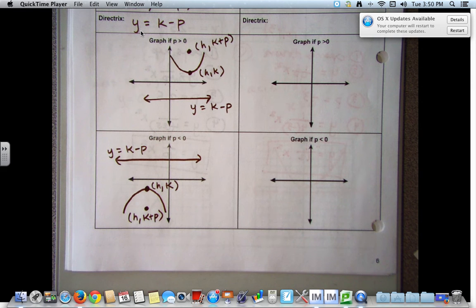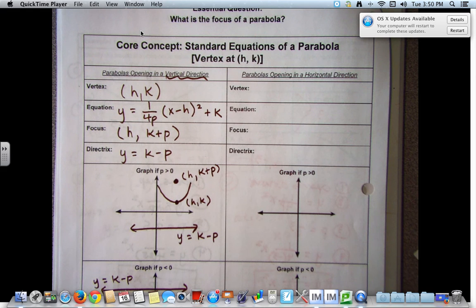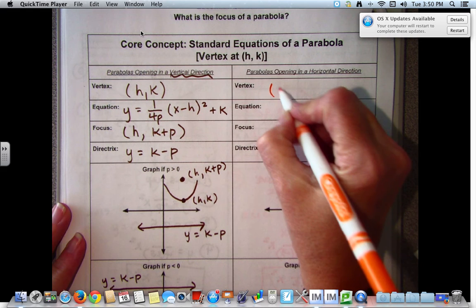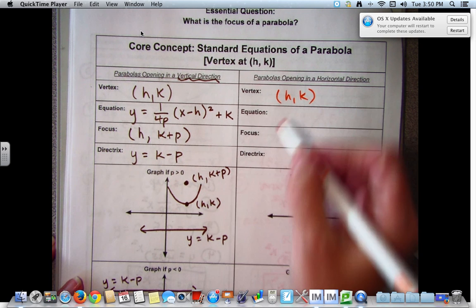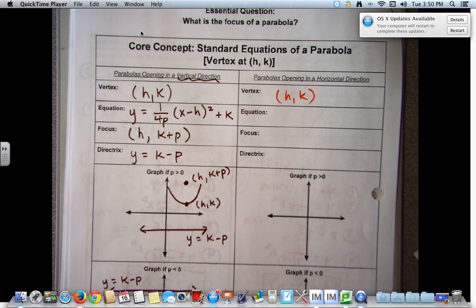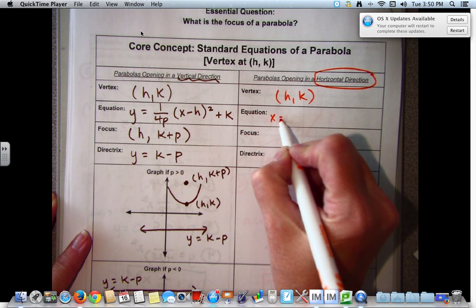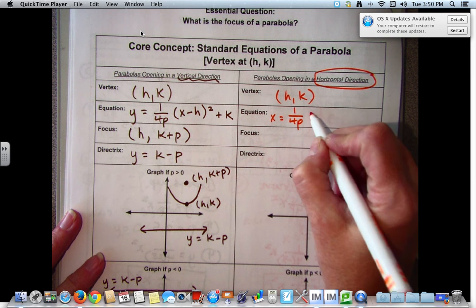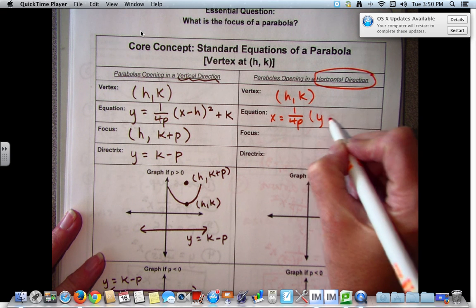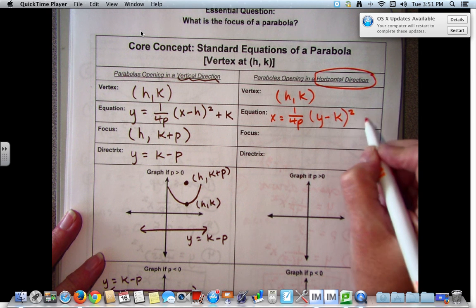Now let's look at parabolas opening in the horizontal direction. Our vertex is still at h, k. Our equation, remember when these open side to side, in horizontal, it's an x equals. It is 1 over 4p times the quantity y minus k squared plus h.